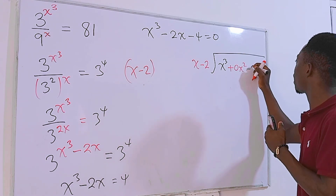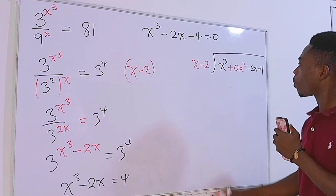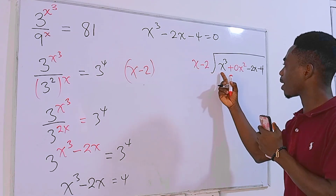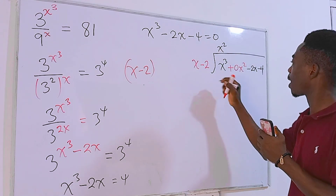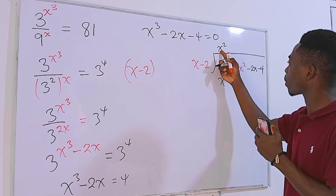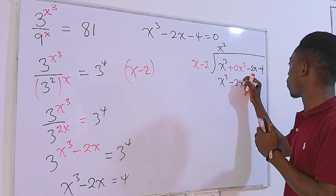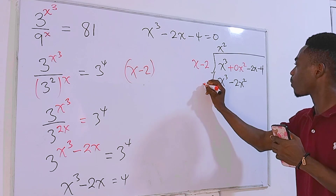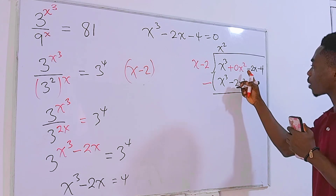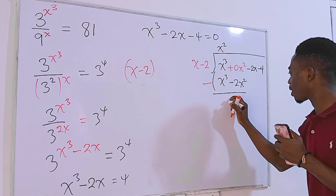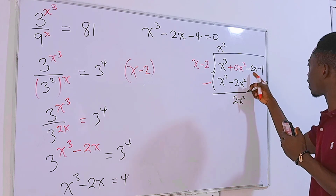What times x gives x cubed? That's x squared. Then x squared times x is x cubed, and x squared times negative 2 is minus 2x squared. Subtracting: x cubed minus x cubed is zero, and 0x squared minus (minus 2x squared) gives positive 2x squared. Bringing down minus 2x.